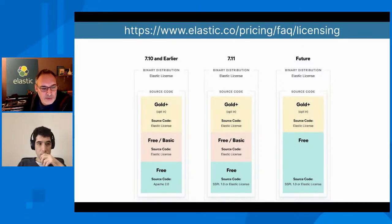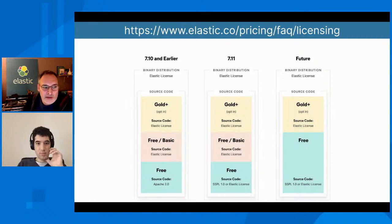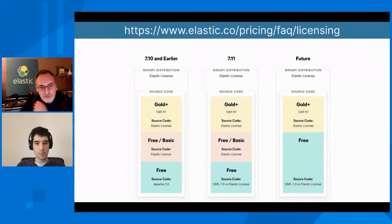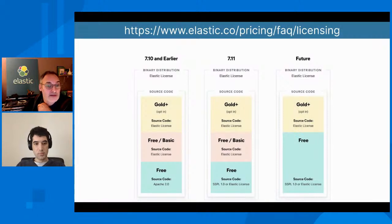Pour la partie free basique, si vous utilisez la distribution par défaut, c'est toujours sous licence Elastic. Sur la version gold et au-delà, c'est toujours sous licence Elastic. Ce qui est important à noter, c'est la partie distribution binaire. Si vous utilisez nos binaires, par exemple avec un Docker pull, vous aviez déjà une licence Elastic. L'opérateur Kubernetes pour Elastic aussi. Ça ne change strictement rien pour la grande majorité des utilisateurs.